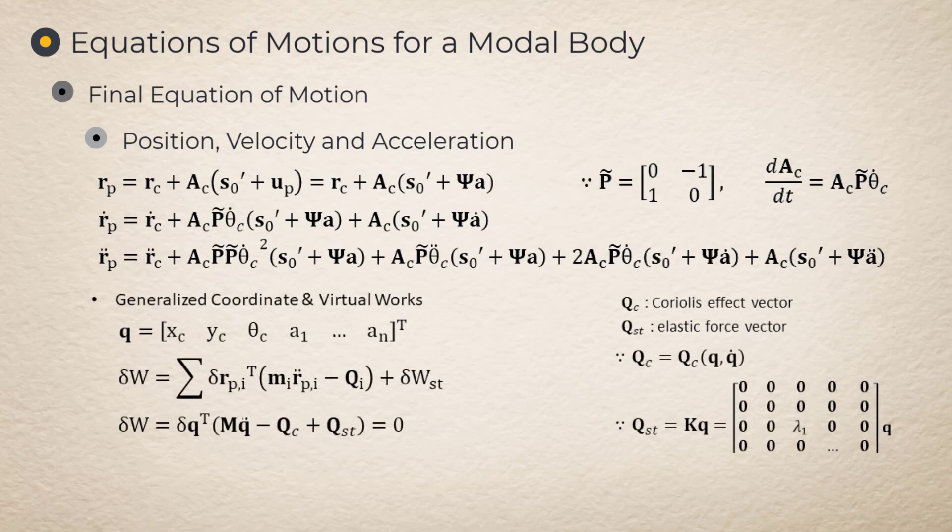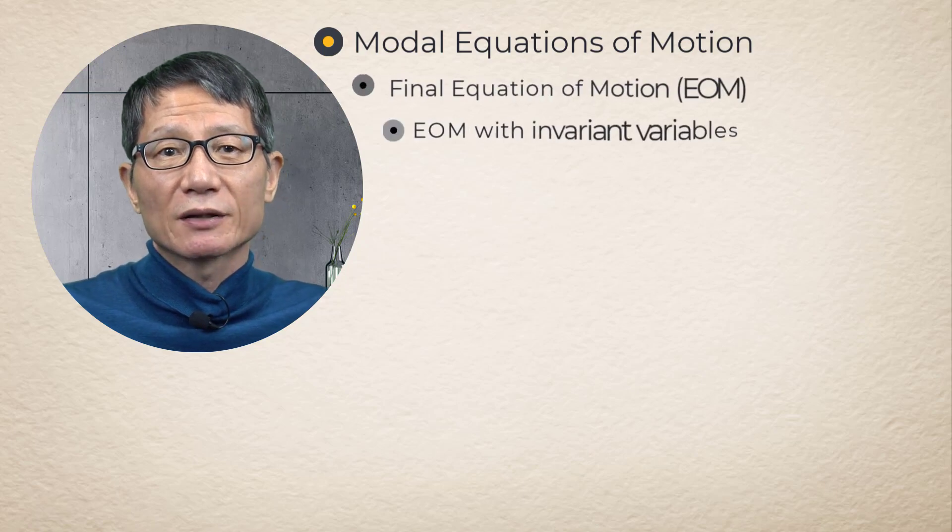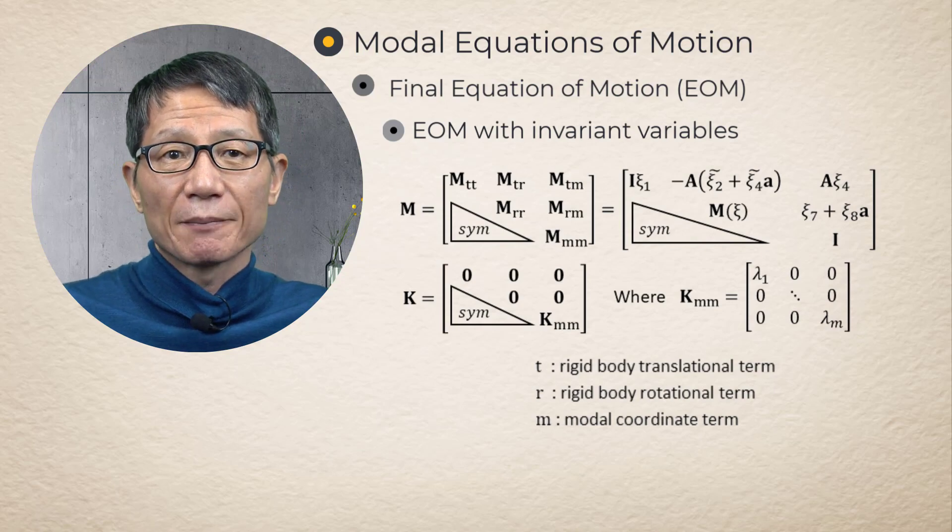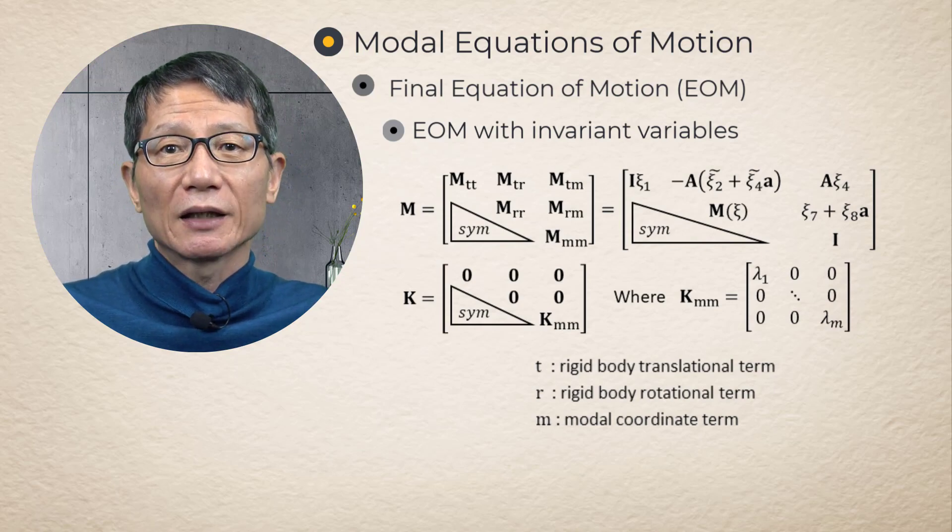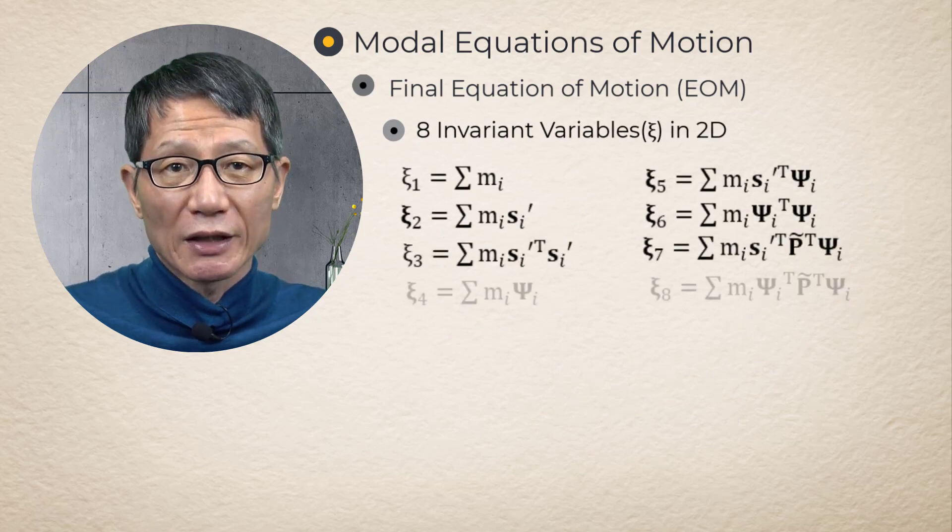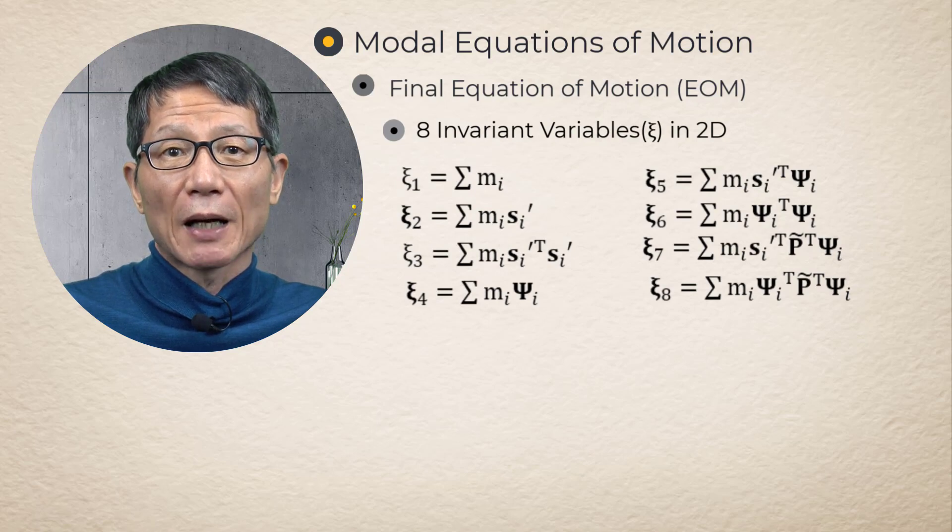Substituting the virtual nodal displacement and acceleration and strain energy into the virtual work equation yields the following equations of motion for a modal body. Modal equation of motion. The mass matrix and stiffness matrix are obtained as in this equation. It is important to note that eight invariants are calculated once and saved to avoid the recalculation associated with the two loops of all flexible body nodes.